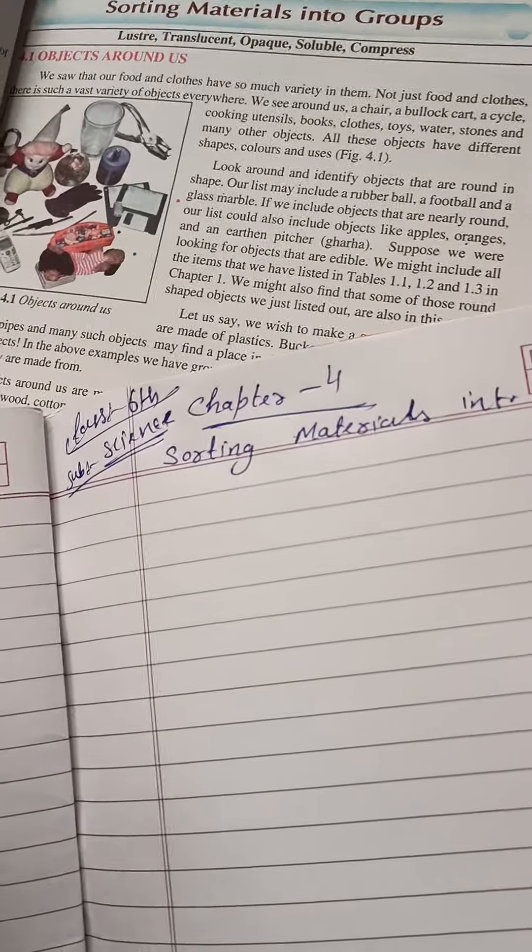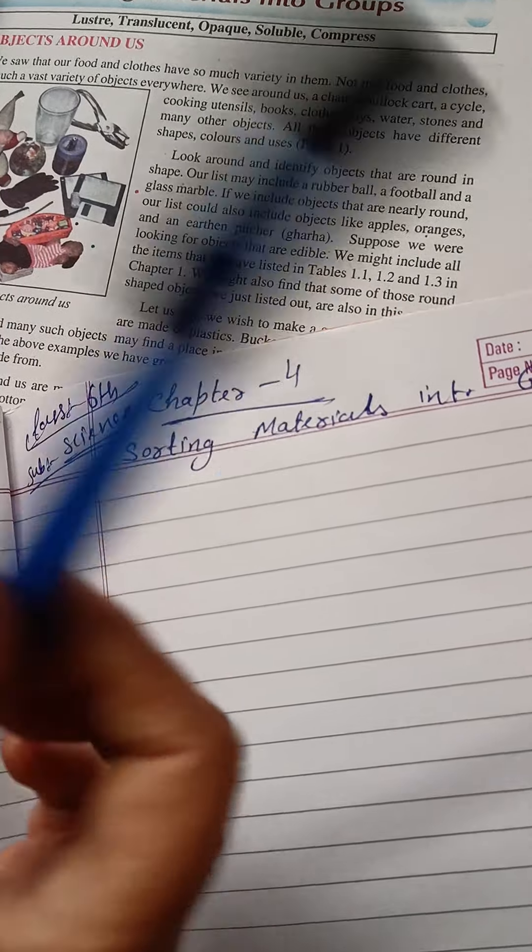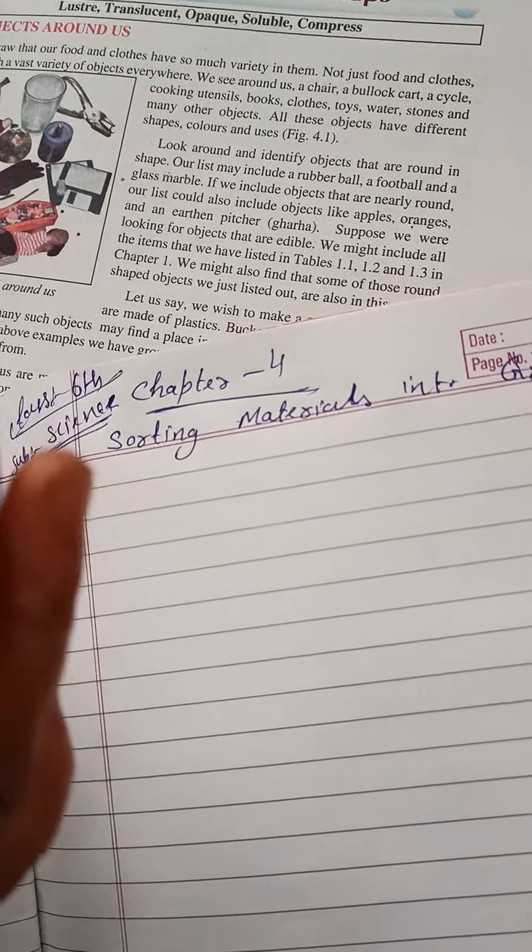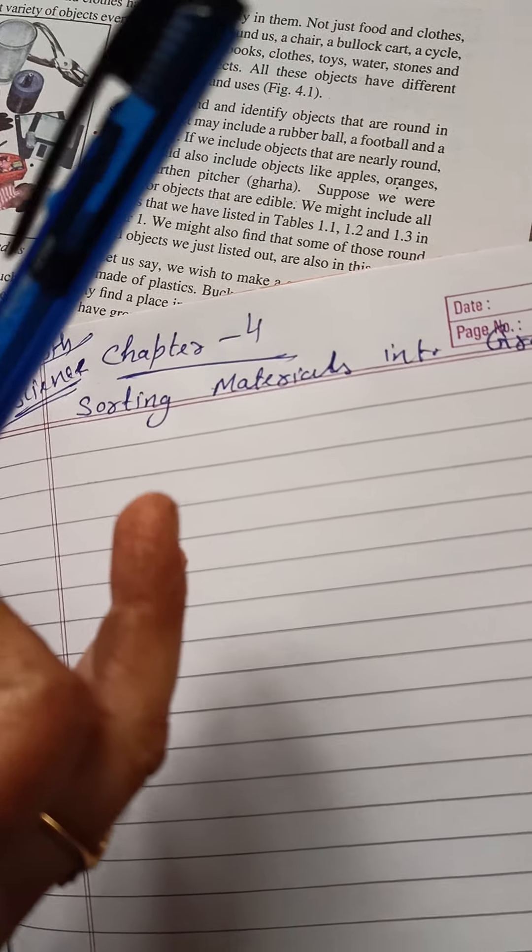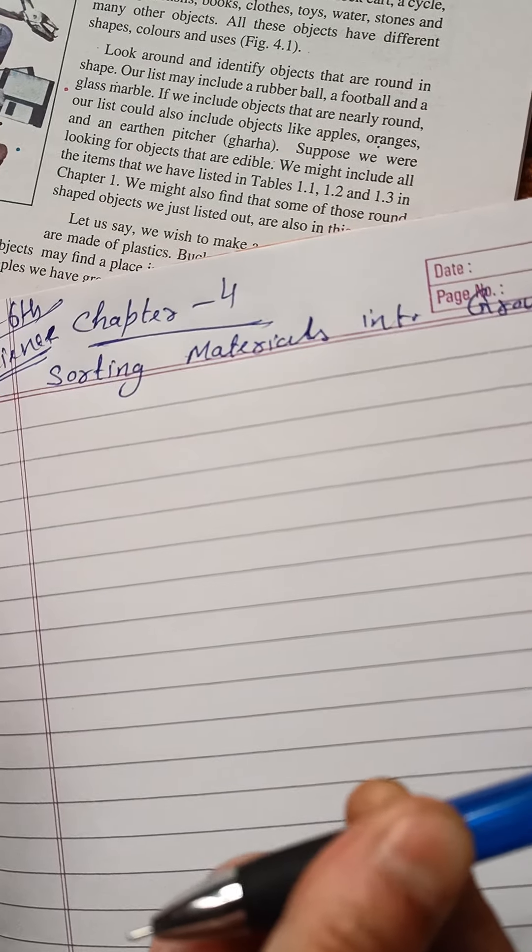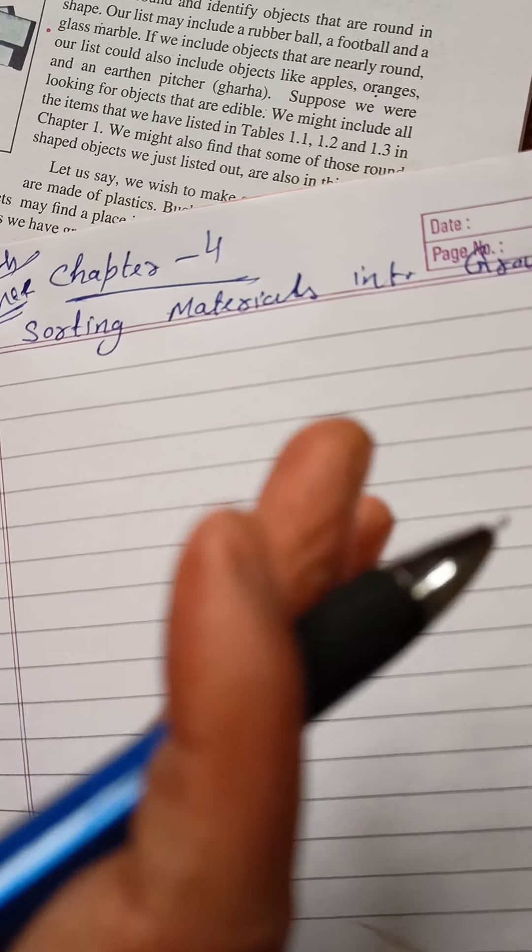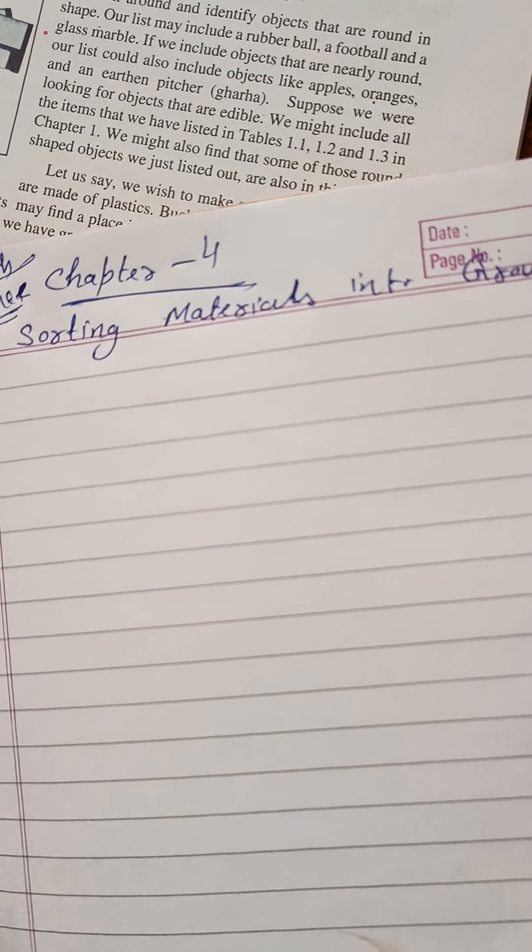One material, like a pen, can be grouped. The book explains grouping and sorting. Sorting means grouping things together - we make a group and sort materials into that group. The book gives examples of sorting and grouping various objects.